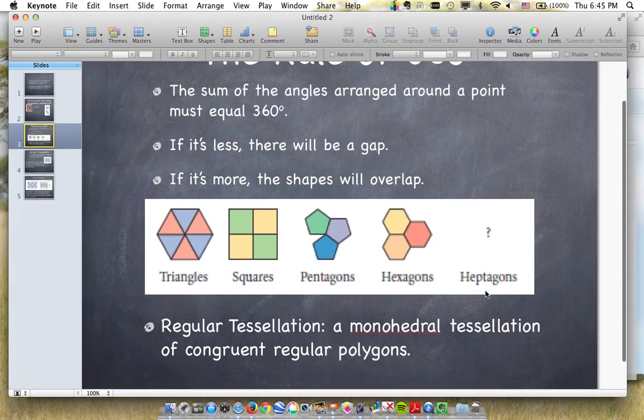And we call those monohedral tessellations that are from the congruent polygons, regular polygons, we call those regular tessellations.